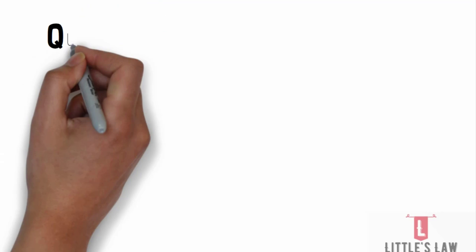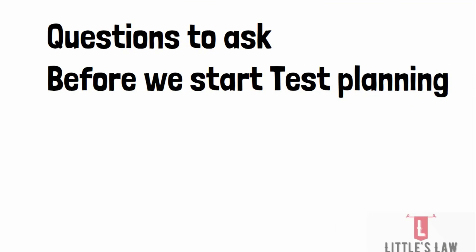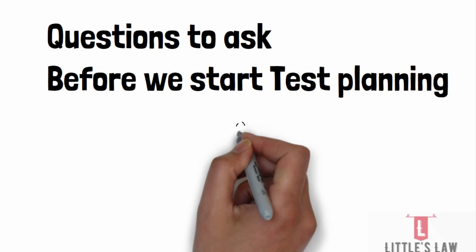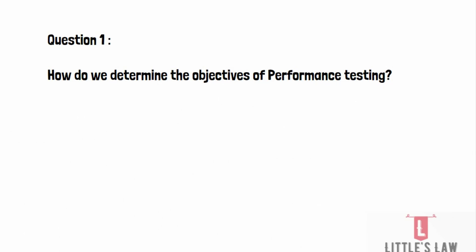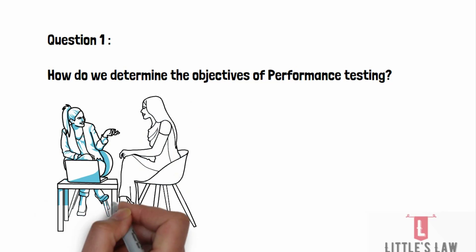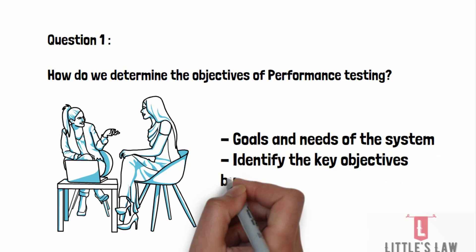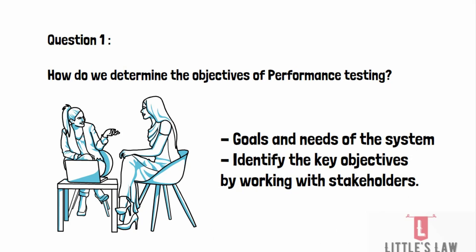Now we will look at some important questions for the planning phase. The first question is: how do we determine the objectives of the performance testing project? The objectives should be determined based on the goals of the project and the needs of the system under test. For example, if the goal is to launch a new e-commerce website, objectives may include verifying concurrent user capacity, ensuring response times are within acceptable limits, and identifying scalability issues. It's very important to work with stakeholders to identify the key objectives.